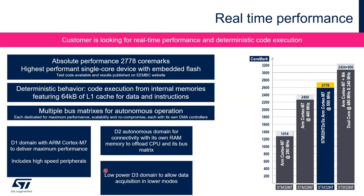We also have the low-power D3 domain. For high-speed peripherals, use D1. The D3 domain is for when you care about power consumption — if your application is sometimes in sleep mode or stop mode. You can use D3 to keep some IOs active, still do data acquisition, and offload the CPU. H7-2 provides a flexible architecture to address performance requirements.